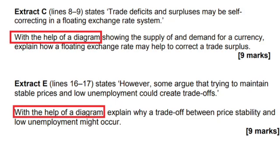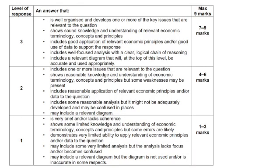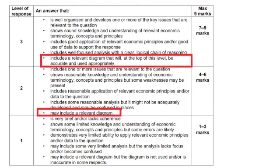Looking at the mark scheme grid for a nine-marker, it's out of three levels. The key difference between level two and level three is that level two may include a relevant diagram, but level three must include a relevant diagram. So if you don't draw a diagram and don't follow the instruction of the question, it doesn't matter how good your explanation is — you are not getting level three. Your diagram has to be drawn to give you any chance of reaching level three.